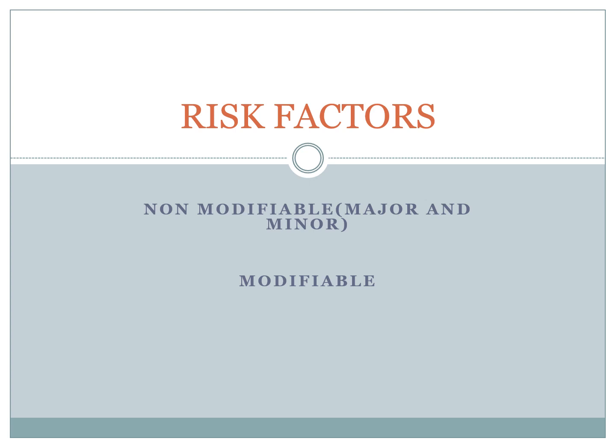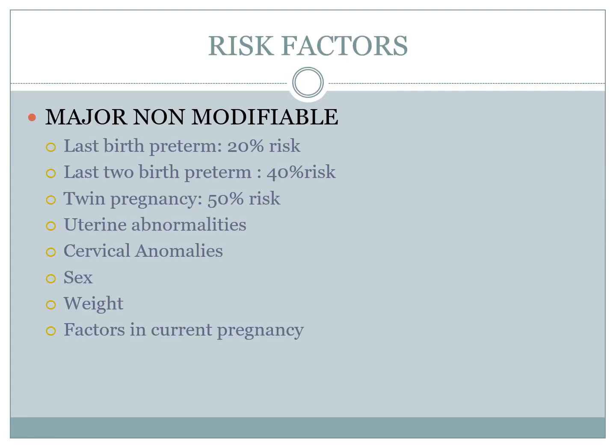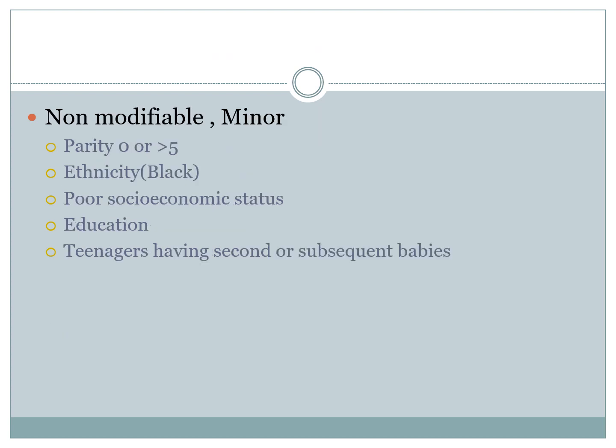There are different risk factors, both non-modifiable and modifiable. Major non-modifiable risk factors include a last birth preterm, which carries at least a 20% risk, and last two births preterm carrying a 40% risk. Twin pregnancy carries a 50% risk of prematurity, as well as uterine abnormalities such as uterine didelphys, cervical anomalies, sex, weight, and factors in the current pregnancy. Minor non-modifiable factors include nulliparity or multiparity with more than 5 births, ethnicity, poor socioeconomic status, education, and teenagers having second or subsequent babies.